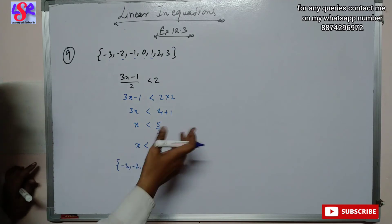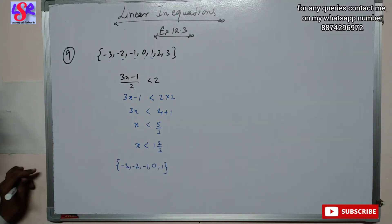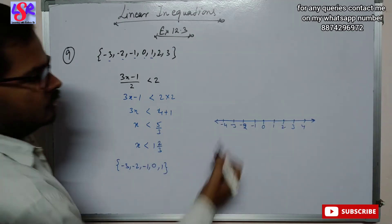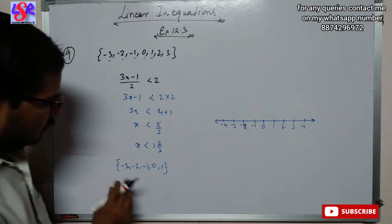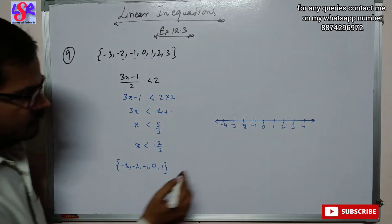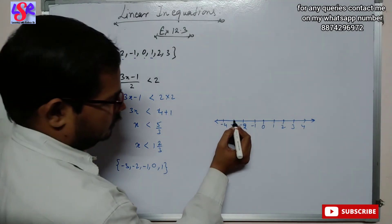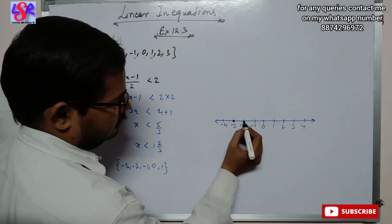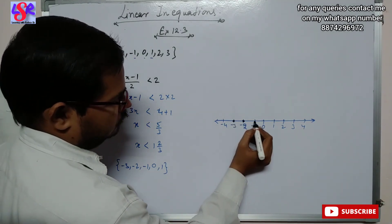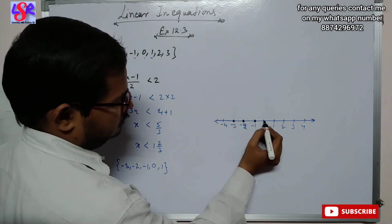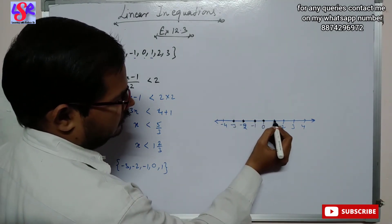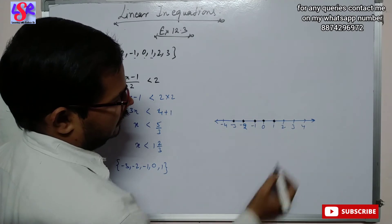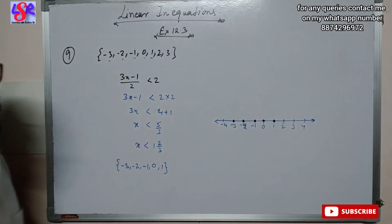We are going to represent this solution on the number line as well. Here we have the number line and we plot all the numbers from the solution set: minus 3, minus 2, minus 1, 0 and 1 as the answer.